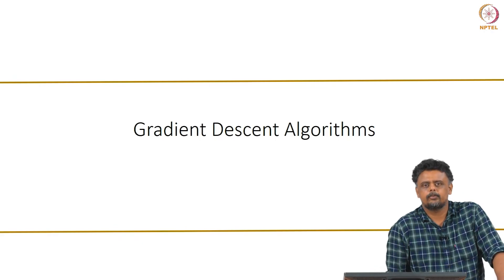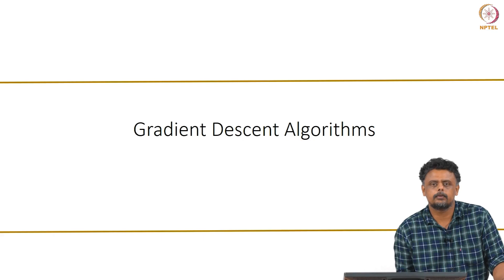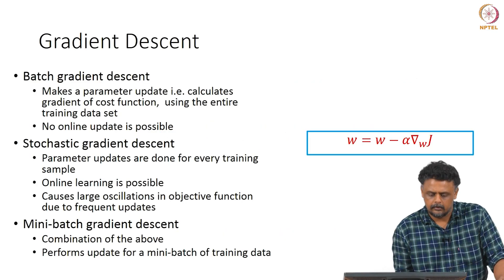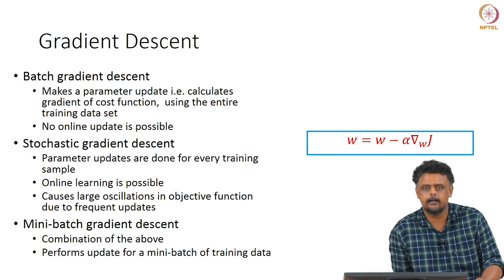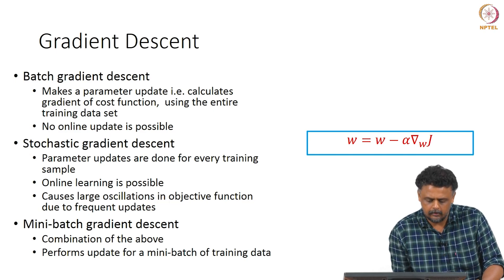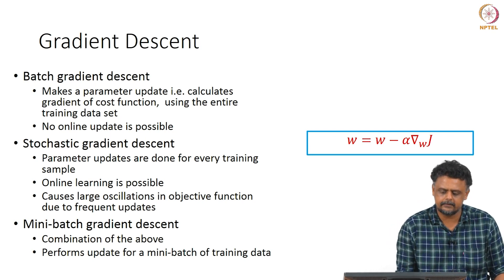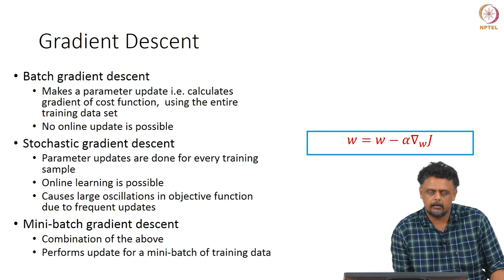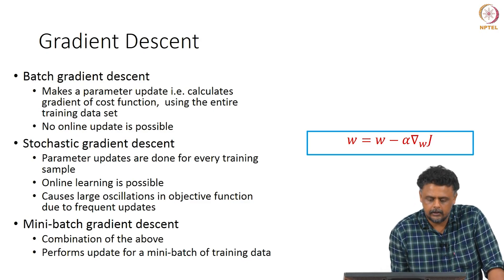Hello and welcome back. In this video we will look at some alternatives to the gradient descent algorithm. Just to refresh your memory, we have looked at gradient descent technique for optimization. There are basically three different versions. One is called batch gradient descent, where the parameter update is made based on the entire training data set — you calculate an average gradient based on the individual gradients for every training data point.